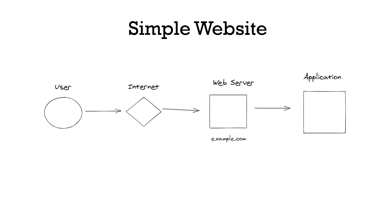Let's get a visual so you can picture this conceptually. In a standard setup, users make a request, the internet routes it to your domain which is an IP address, and behind that is your web server — something like Nginx or Apache. That web server routes it to your application, such as Express.js, LAMP stack, Django, or WordPress. Your application code then interacts with the database or delivers content like a blog post.